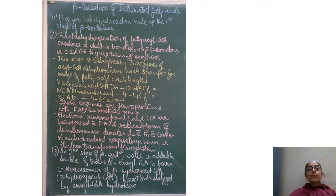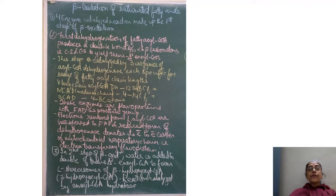Today we are going to study about beta oxidation of saturated fatty acid. Four enzyme-catalyzed reactions make up the first pass of beta oxidation. The first is the dehydrogenation of fatty acyl-CoA, which produces a double bond between alpha and beta carbon atoms — that is carbon atom 2 and carbon atom 3 of acyl-CoA — to yield trans-delta-2-enoyl-CoA. This step is catalyzed by three isozymes of acyl-CoA dehydrogenase, which are specific for fatty acid chain length.